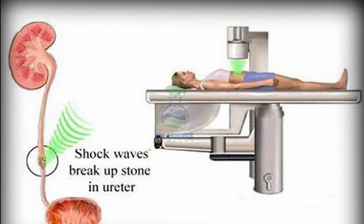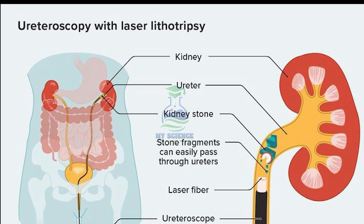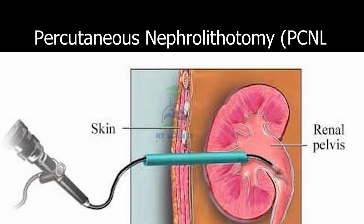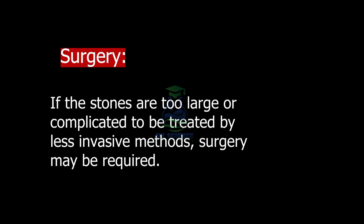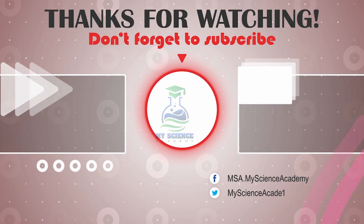In ureteroscopy, a thin scope is passed through the urethra to the urinary bladder and into the ureter, where the stone is removed or broken up using a laser. Percutaneous nephrolithotomy is a surgical technique where large stones are removed through a small incision in the back. Finally, surgery is required if the stones are too large or complicated to remove by other methods.